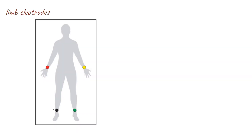The limb electrodes are the left arm electrode, the right arm electrode, the left leg electrode, and the right leg electrode. The right leg electrode is a neutral electrode and is only present to complete the electrical circuit. It plays no role in the formation of the ECG itself.